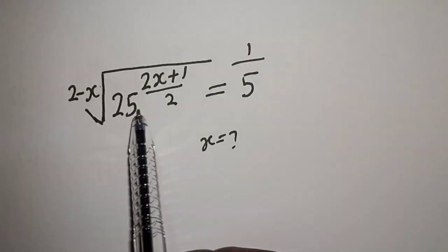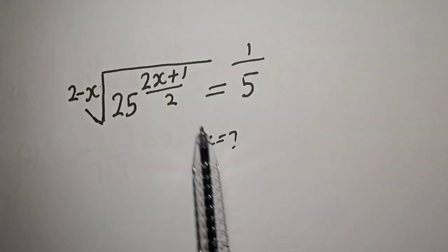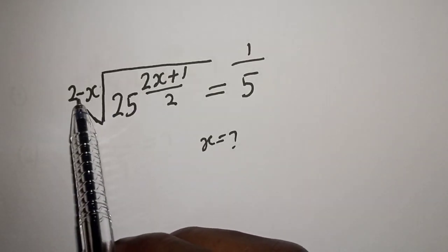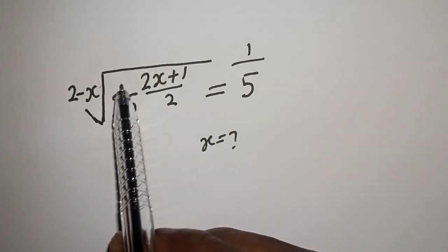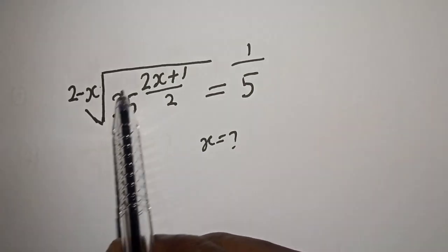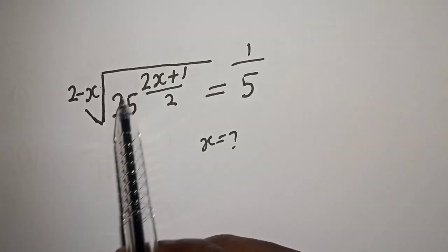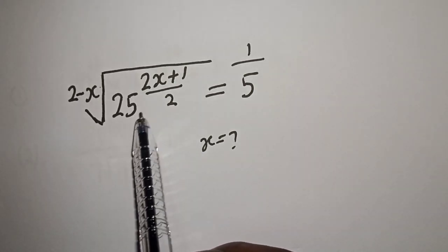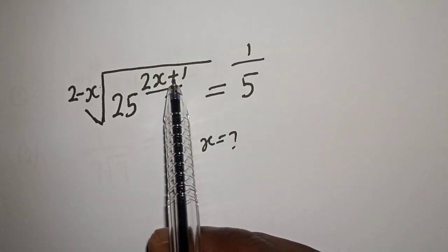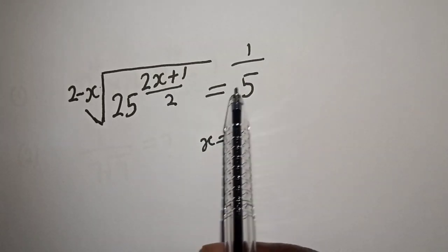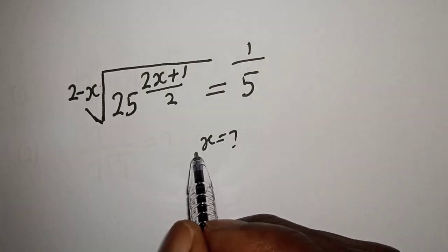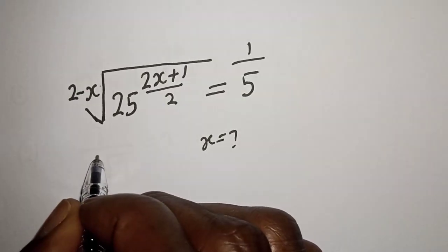Hello, welcome to Mathfocus. How to solve for x from this given equation? 2 minus x, root of 25 raised to power 2x plus 1 over 2, is equal to 1 over 5. What is the value of x?